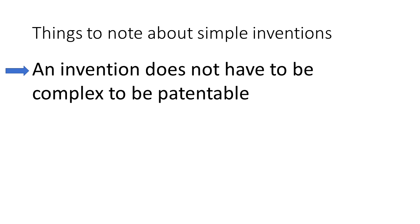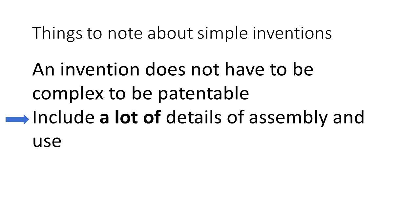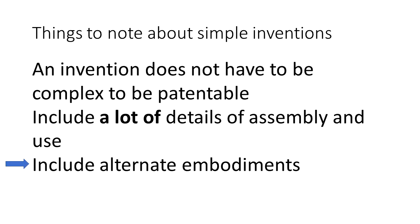So for a simple invention I try to include a lot of details about how it is assembled and used, what kinds of materials and methods of manufacture, whatever may apply in a particular situation. You definitely want to include alternative embodiments, different arrangements as applicable to the invention.